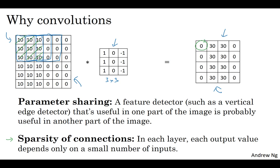So it's as if this output unit on the right is connected only to nine out of these 36 input features. And in particular,